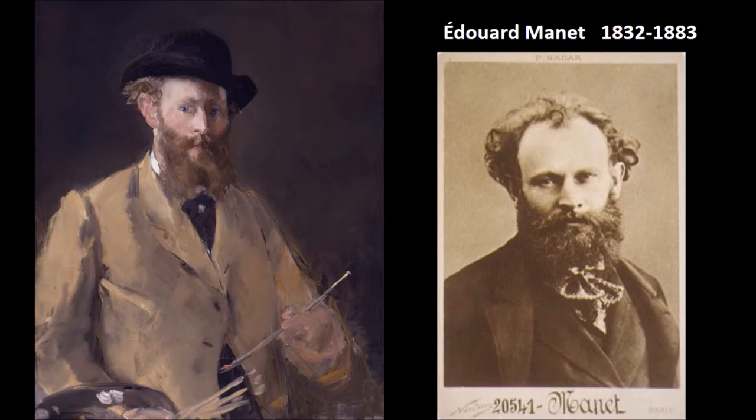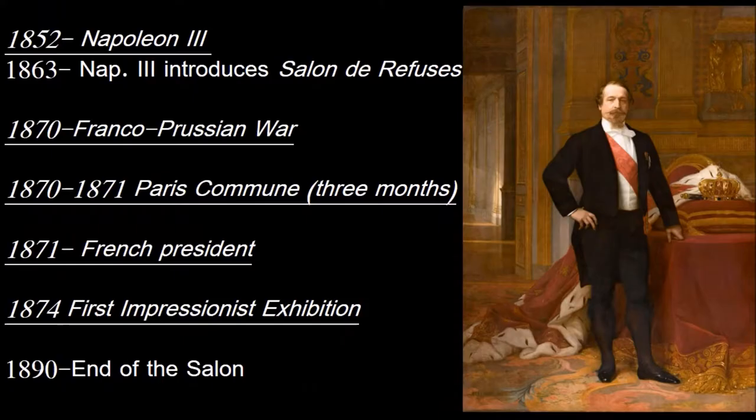Manet comes from a very affluent background. His father was a lawyer, and he was supposed to follow along in his father's footsteps, but didn't do that. He was very well-traveled — he went to Northern Europe and as far as Rio de Janeiro in the earlier part of his life, giving him good exposure to the art of Europe.